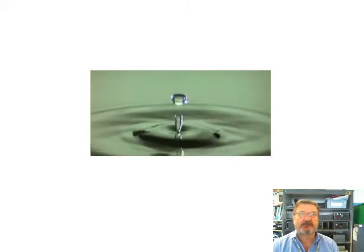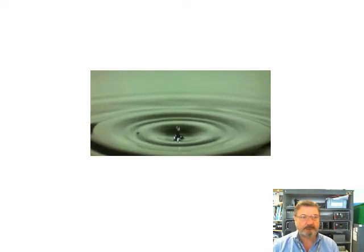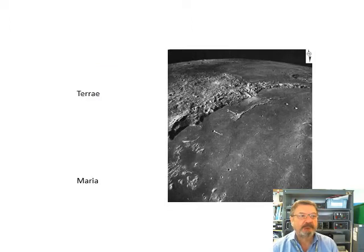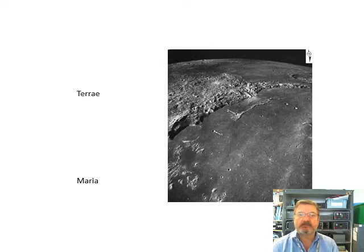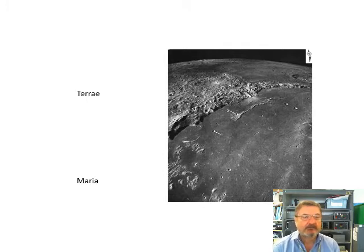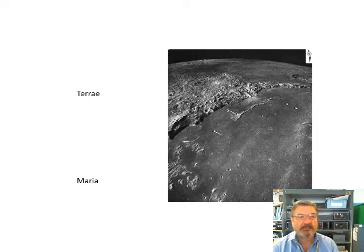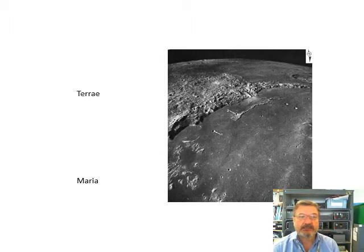Craters are formed by things smacking into the surface of the moon. Terre and Maria: terre basically means land, and maria means seas. At one time, many years ago, it was thought there were seas on the moon, just as on Earth there was sea and there was land. Now we know the entire surface is solid, but we have flat lowlands and much rougher highlands. So: maria and terre.